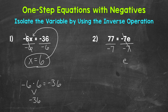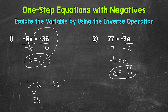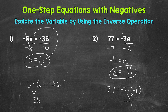The negative 7s equal 1, giving us 1e, which is just e — our variable is now isolated. e equals, and on the left side, 77 divided by negative 7: a positive divided by a negative equals a negative, so we get negative 11. e equals negative 11. Let's check by plugging negative 11 in for e: 77 equals negative 7 times negative 11. A negative times a negative equals a positive, so negative 7 times negative 11 does equal positive 77. We have the correct solution: e equals negative 11.